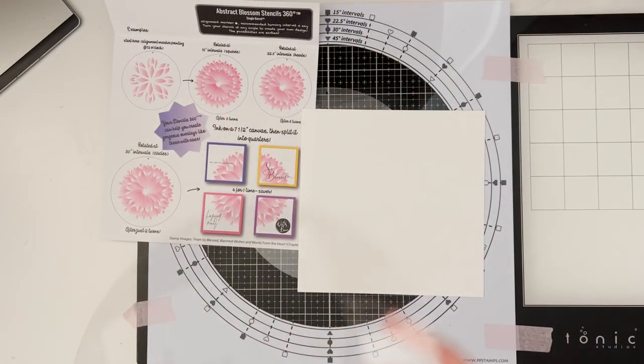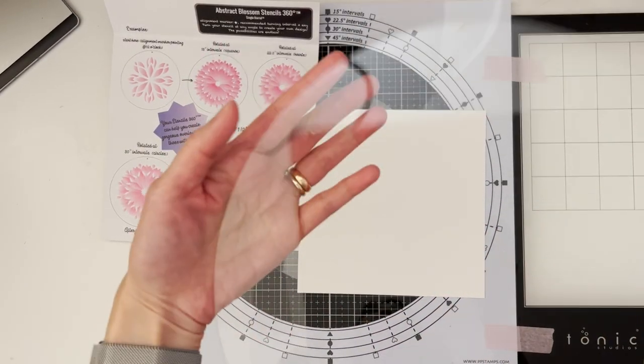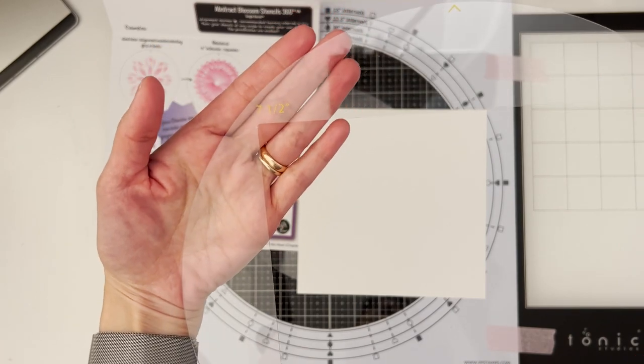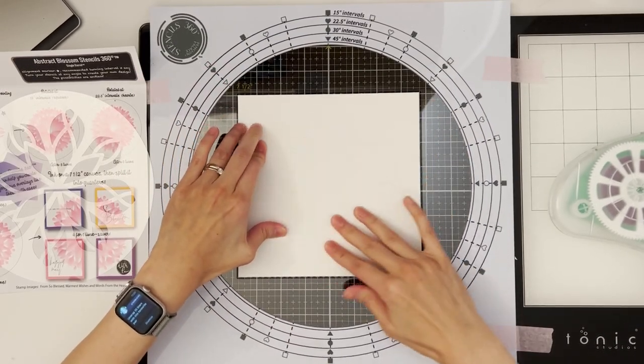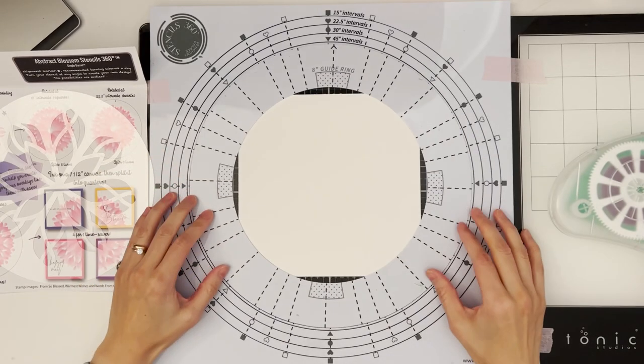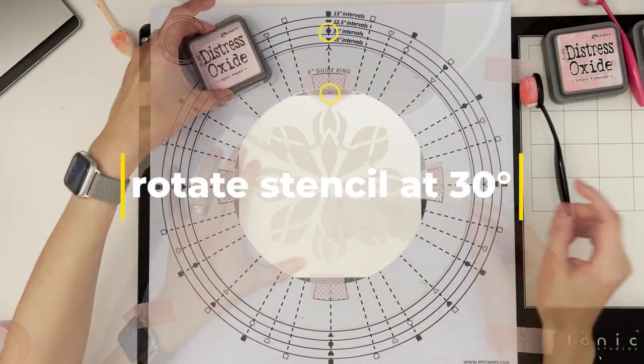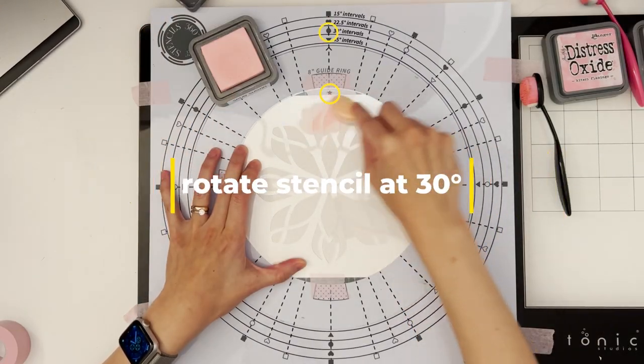Now onto my first example. I'm using the 7.5 inch paper positioner for a large canvas. I'm starting with the alignment marker pointing at 12 o'clock as usual and inking with distressed oxide sponge sugar.